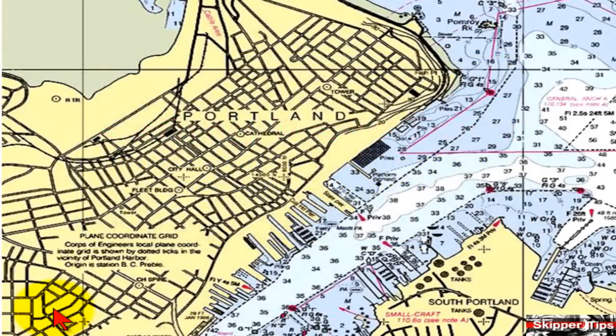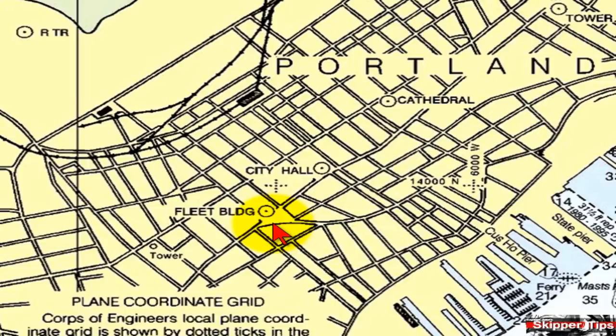Let's take a look at the objects we have available for navigation on this large-scale chart of Portland, Maine. Prominent objects are plotted onto a chart with three criteria: they must show a dot, a full circle, and the name in all capital letters, such as shown with the Fleet Building.